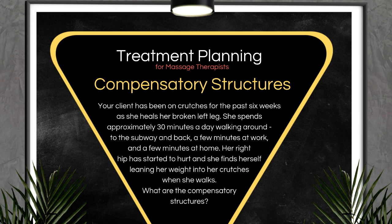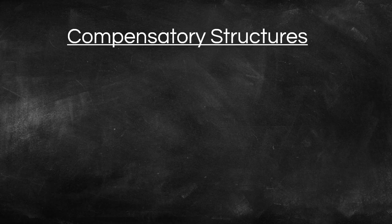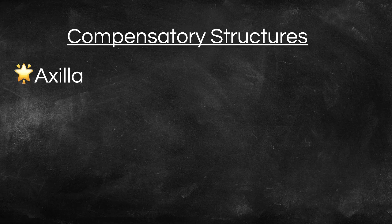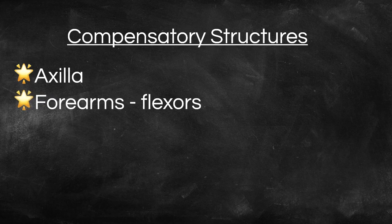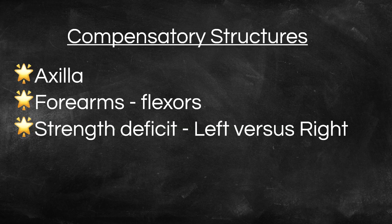Client scenario number three: your client has been on crutches for the past six weeks as she heals her broken left leg. She spends approximately 30 minutes a day walking around to the subway and back, and a few minutes at work and at home. Her right hip has started to hurt and she finds herself leaning her weight into her crutches when she walks. She may be pressing down into the handles of her crutches and swinging her body to minimize the pain in her hips. This would create a compression in her axilla, tight forearm flexors, a tight grip and isometric stabilization, as well as a strength deficit between the right and left hip.